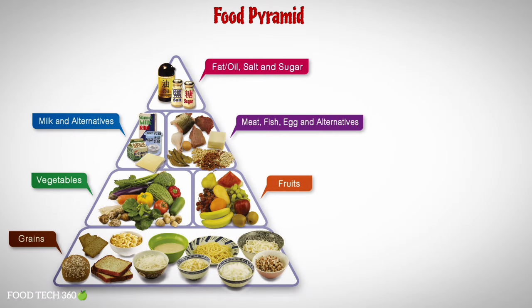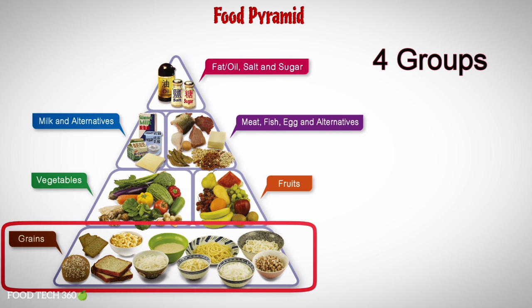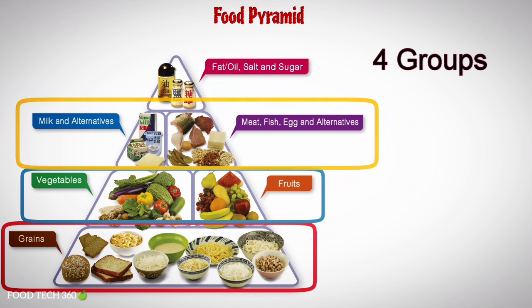This is a basic model of a food pyramid. The food pyramid consists of four food groups: grains at the bottom, fruits and vegetables above that, then milk and milk products and meat, fish, egg and their alternatives. Finally, fats or oils, salt and sugar at the top.